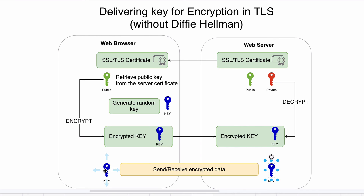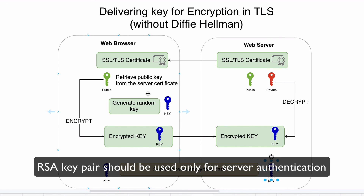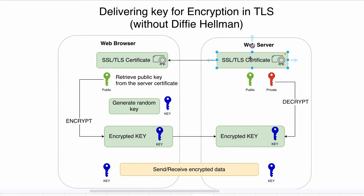That is the drawback of such key delivery. In summary: you should avoid using such key delivery whenever possible. The RSA key pair should be used only for authentication of the web server — nothing else. It shouldn't be used for encryption of any sensitive data, like the secure key used for data encryption. In the next lecture, let's explore how the key is generated with the Diffie-Hellman algorithm.